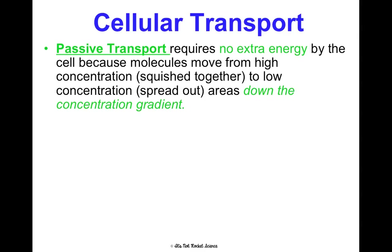Passive transport requires no extra energy because cells are moving from a high concentration — very packed together — to a low concentration, meaning they're spread out. So we say they're going down the concentration gradient. Think of this like a slide: the top of the slide is high concentration, the bottom is low concentration. Going down the slide doesn't require any extra energy, because you're just naturally doing what you want to do.